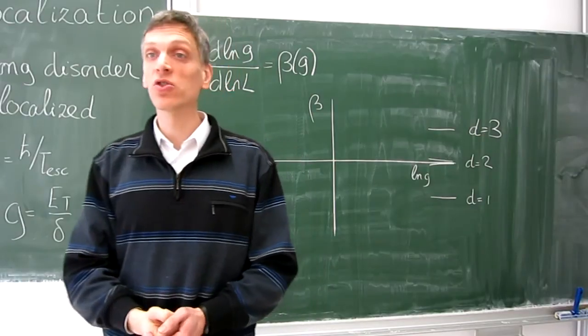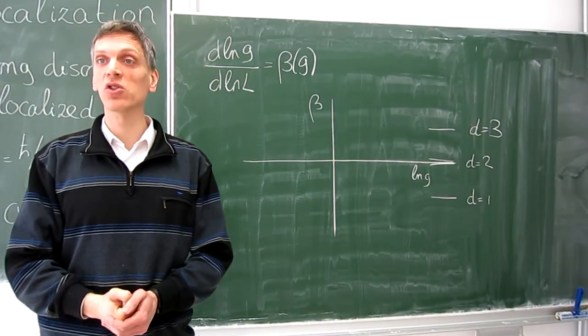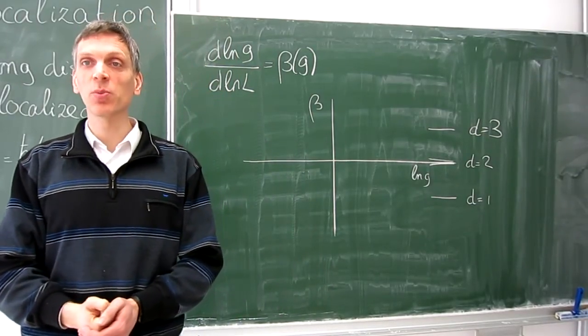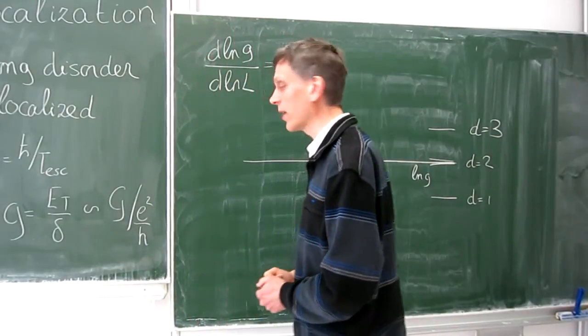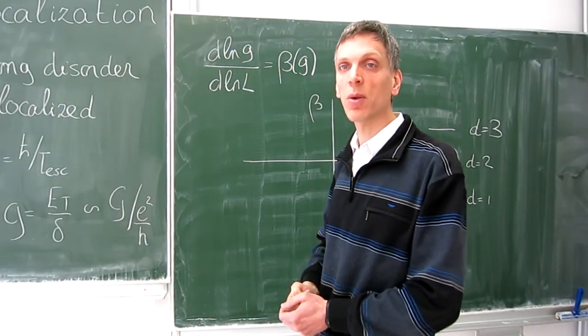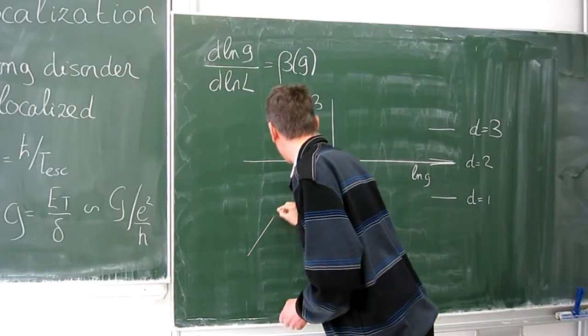On the other hand, for g much smaller than 1, in the localized regime, conductance depends exponentially on system size and you find beta of g is log g plus a constant. Something like this.